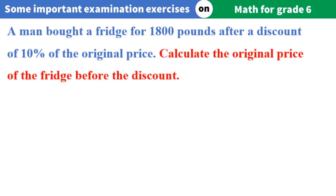A man bought a fridge for £1,800 after a discount of 10% of the original price. Calculate the original price of the fridge before the discount.